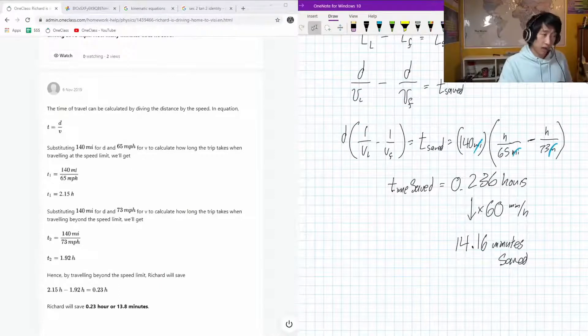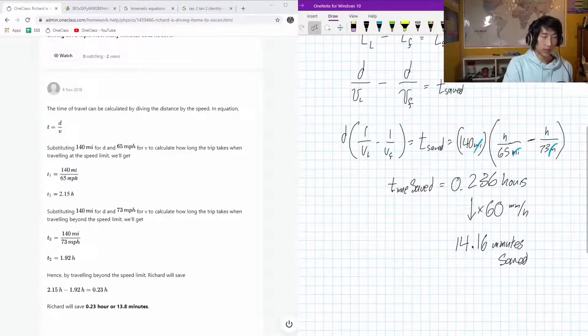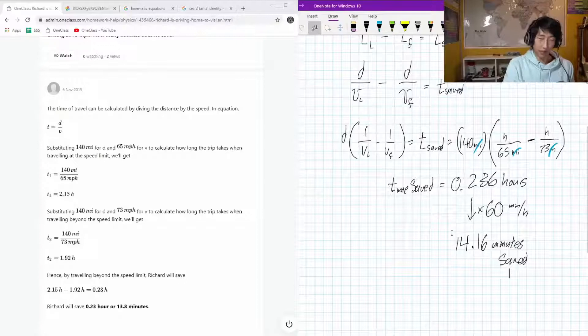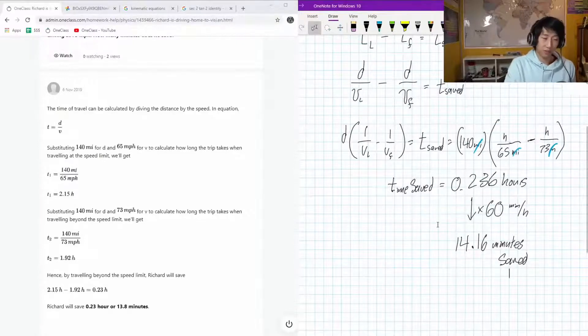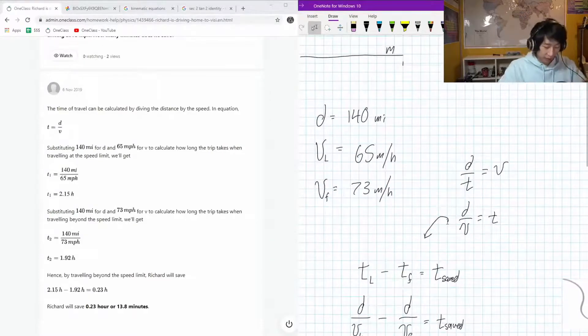It's something interesting to think about. You increase your speed by like 10 miles per hour, but you only end up saving like 14 minutes. So you're risking speeding tickets and all that just to save 14 minutes. Is it worth it? It's up to you. I don't recommend speeding, but that was what Richard did.